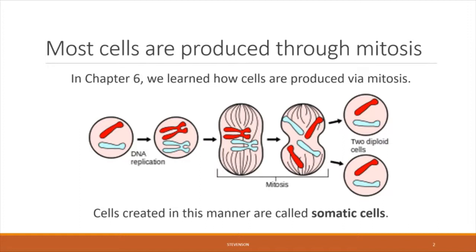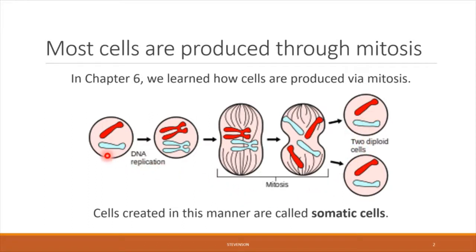To recap, mitosis involves a cell replicating its DNA and then undergoing a series of phases which allow it to split that DNA in half in order to create two identical cells — identical to both each other as well as the original parent cell that started the process. Cells made through mitosis are called somatic cells.